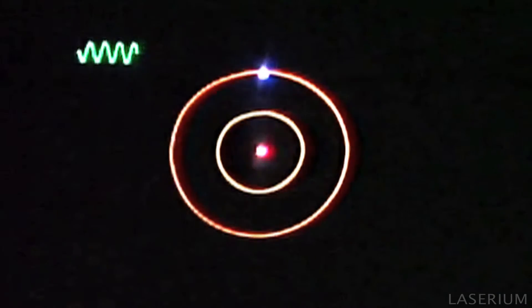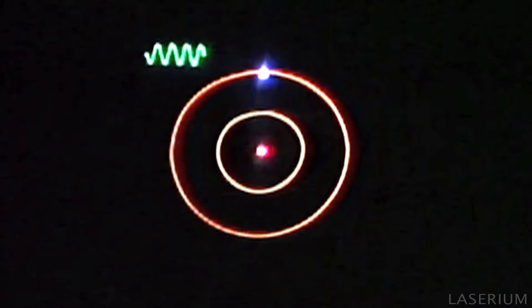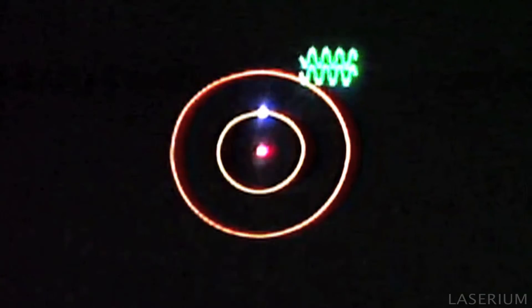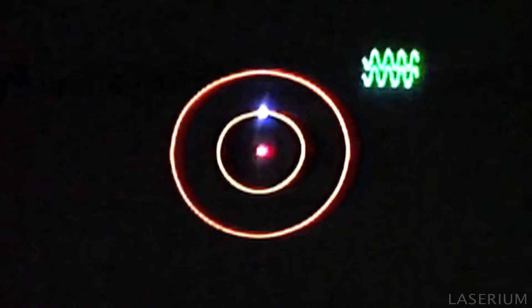Stimulated emission occurs when a photon that has already been released passes near an atom in the electrically excited state and causes it to release another photon. This photon will be of the same frequency or color and will travel side by side with the first.